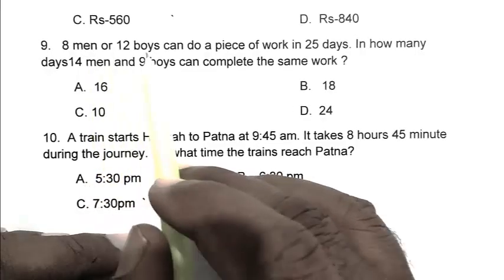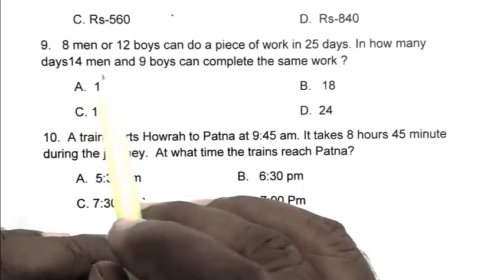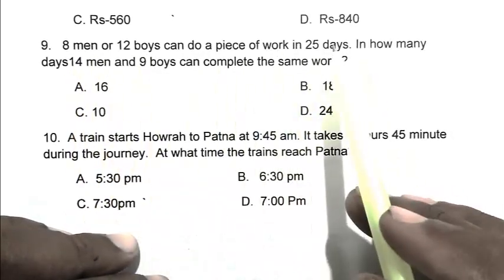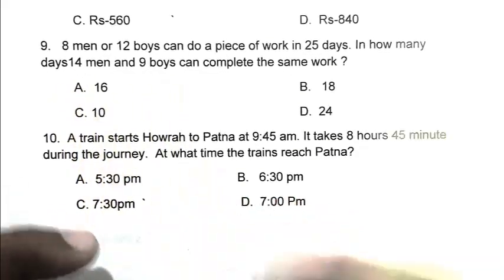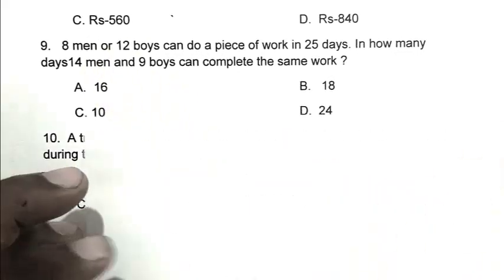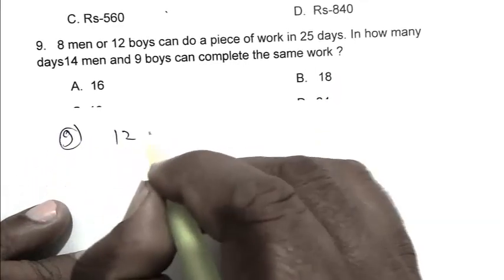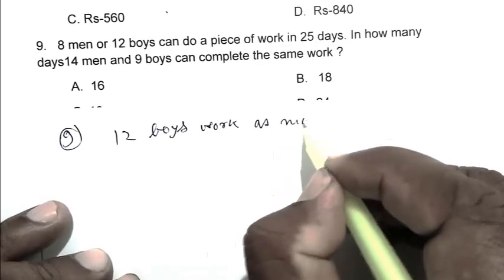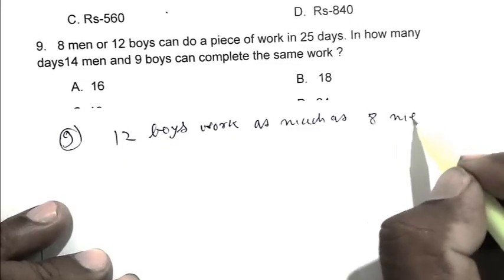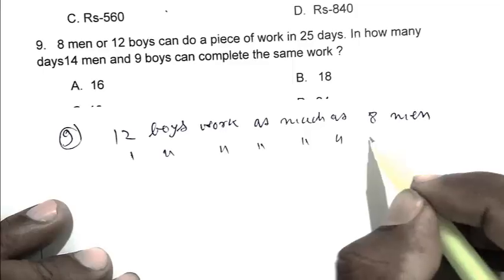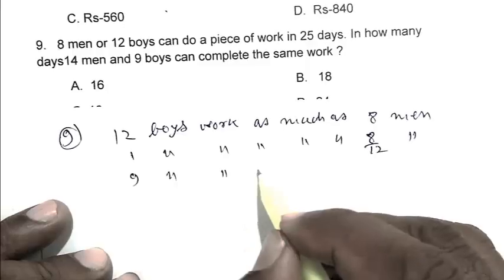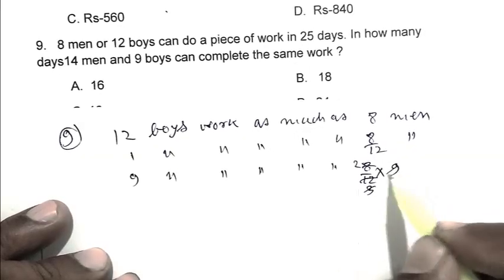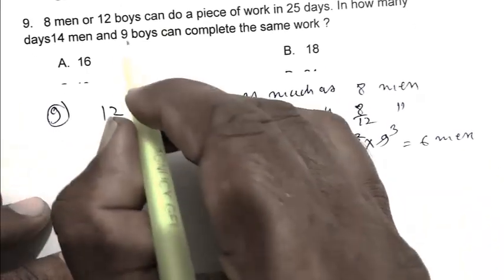Question number nine: 8 men and 12 boys can do a piece of work in 25 days. In how many days can 14 men and 9 boys complete the same work? We see that 8 men and 12 boys work individually. Here, 14 men and 9 boys work together. We replace the boys by men. 12 boys work as much as 8 men. 1 boy works as much as 8 by 12 men. 9 boys work as much as 6 men.